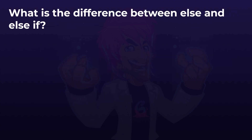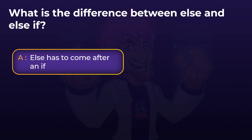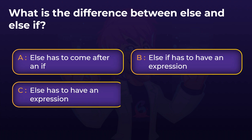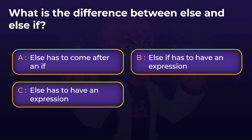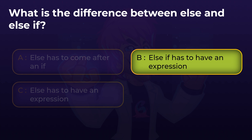Second to last question: what is the difference between else and else-if? The answer is that else-if has to have an expression. Answer A said else has to come after an if — that is true, but it's not the difference between else and else-if, because they both have to come after an if or else-if. And saying else has to have an expression is also invalid — it's else-if that must have an expression. So the only valid answer is that else-if has to have an expression. Pay attention to the question and the answer.